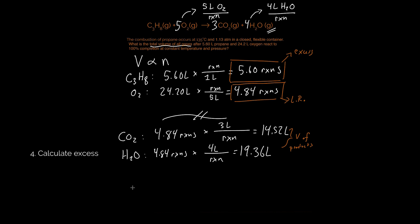And so the way you calculate the excess is with a pretty simple formula that looks a lot like what we've done already. But I'm going to write here that the propane remaining is going to be equal to the 5.60 liters that I had in the very beginning minus the amount that was consumed. So the 4.84 reactions. And for every reaction, we consumed 1 liter. And that's going to be equal to 0.76 liters.